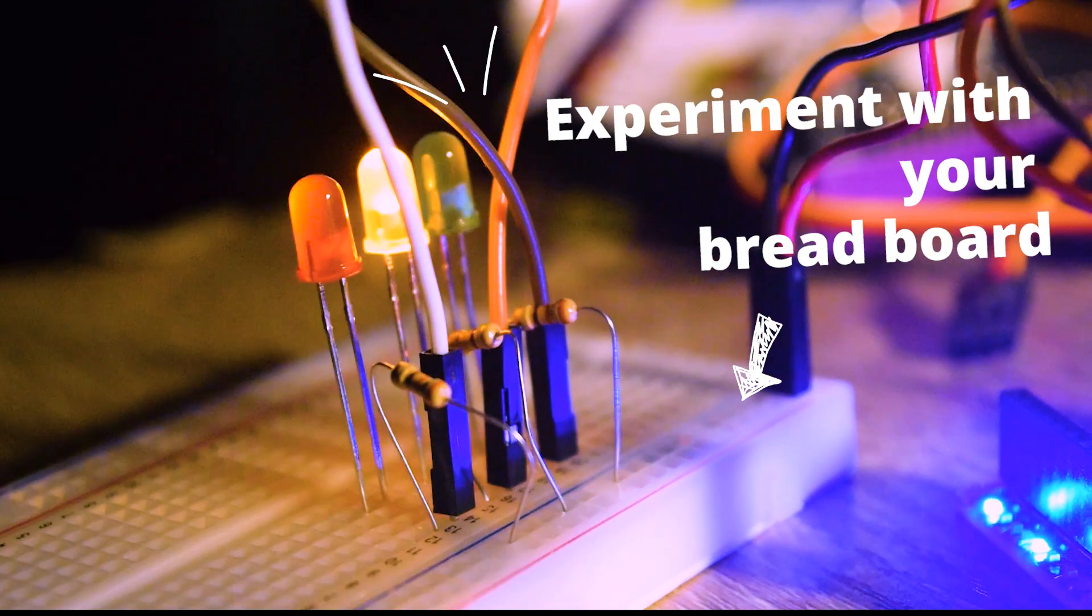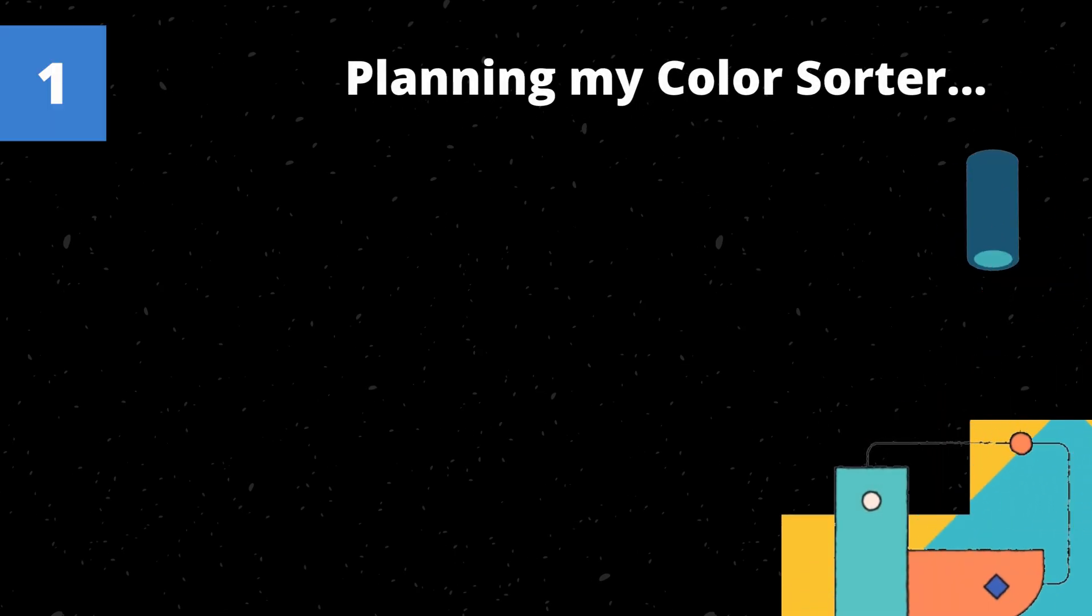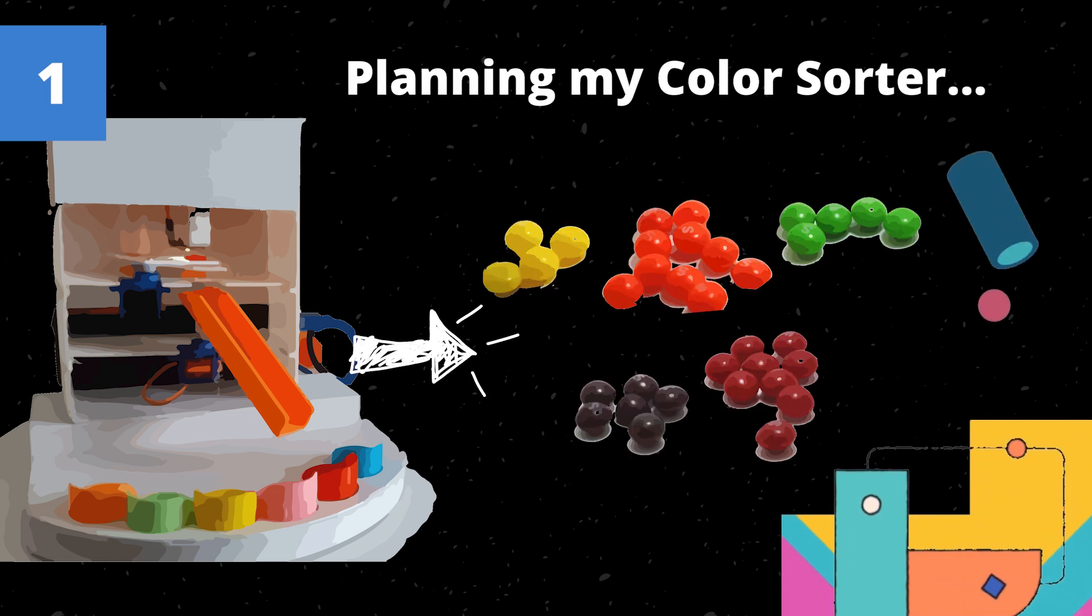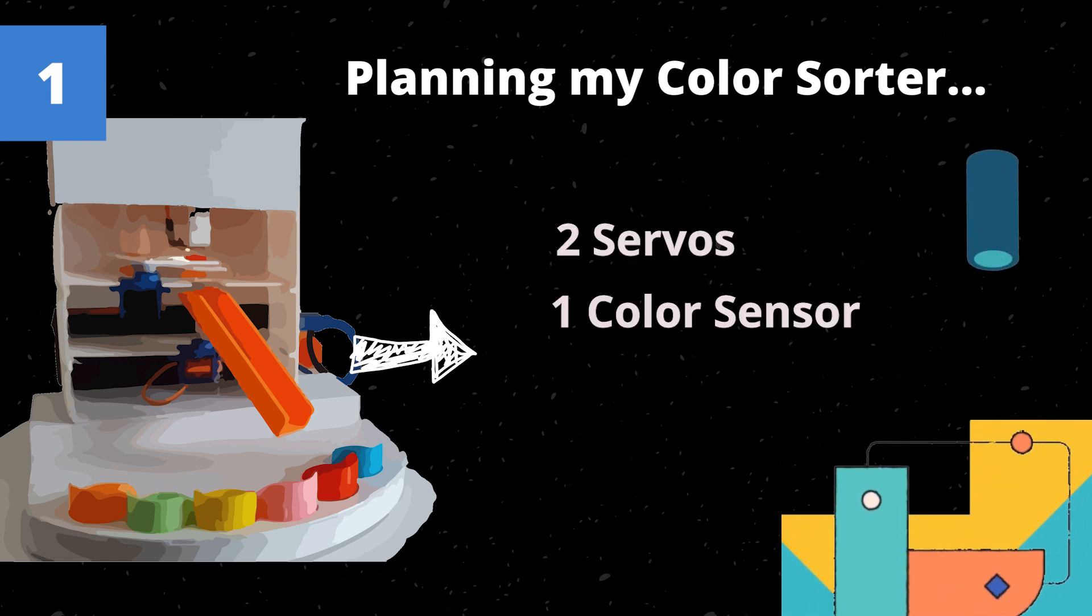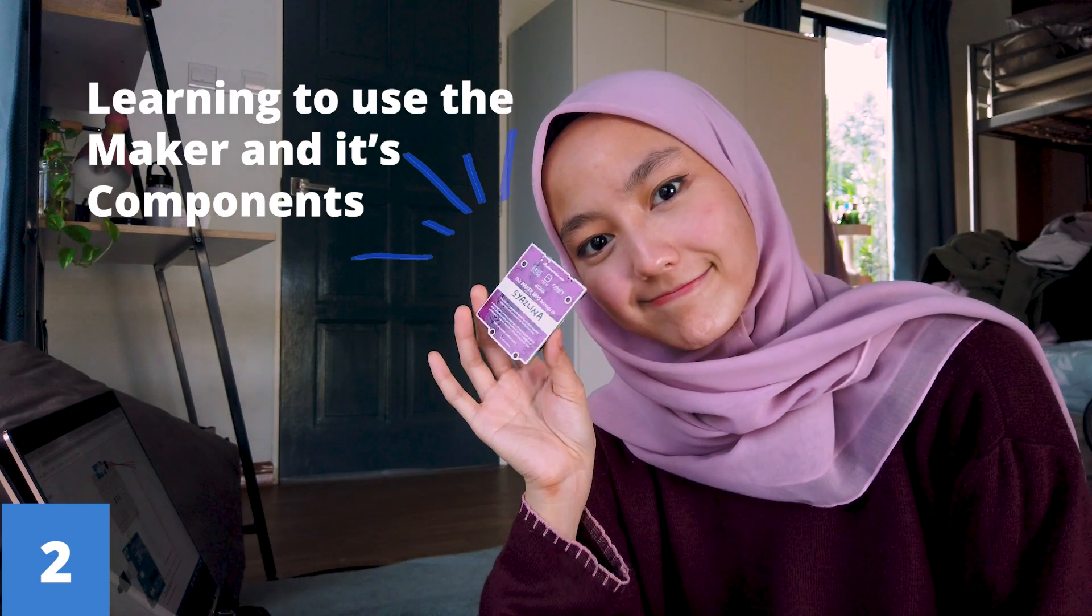Okay, let's start planning the color sorter. Now this is kind of how I want my sorter to look like. The key requirements for this is to have it sort and separate them accordingly to different colors. Now the main components used for this are two servos to move the skittles, one color sensor to detect the different colors, and lastly the main component, the maker nano, the brain of the machine. Now we've got it all planned, let's learn how to use the maker nano and its components and sensors.